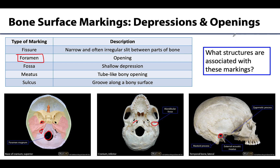Let's think about what structures are really associated with these markings and why they are there. An important thing to understand about bone is that neurovasculature forms first, and then bone forms around the neurovasculature. So the size and shape of the neurovasculature will very much affect the size and shape of the foramina, fissures, or sulci that traverse through those regions. Additionally, particularly with the fossa, these may be found in regions where bones form joints — which is certainly the case for the mandibular fossa, which is the mandibular portion of the temporomandibular joint, or TMJ.